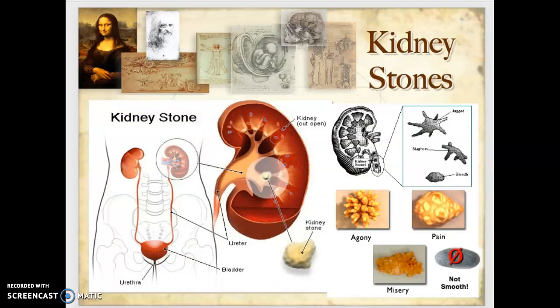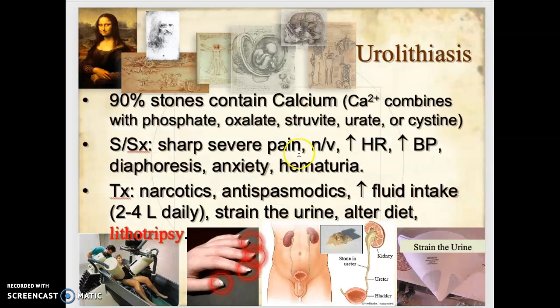To visualize the pain, picture that jagged stone going through the ureter. I envision a woman with long fingernails digging into the walls of the ureter — as urine pushes the stone downward, those jagged edges are literally tearing and ripping into the wall, which explains both the extreme pain and the hematuria from all that bleeding.